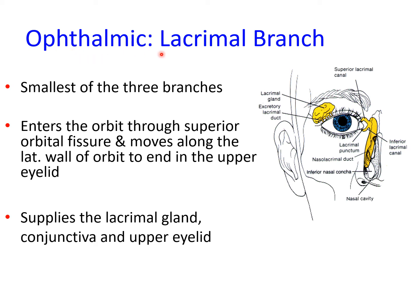The second branch of the ophthalmic nerve is the lacrimal branch, which is the smallest of the three branches. It enters the orbit through the superior orbital fissure and moves along the lateral wall of the orbit to end in the upper eyelid. It provides innervation to the lacrimal gland, located in the superolateral portion of the orbit, and also innervates the adjacent conjunctiva and upper eyelid. The lacrimal branch receives a communicating branch from the zygomaticotemporal branch of the maxillary nerve.